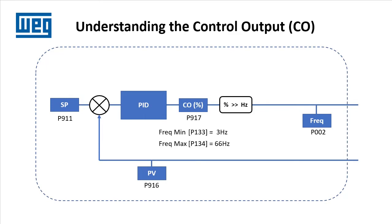So if you enter a 3 for the min frequency and a 66 for the max frequency, a control output of 0% means 3 hertz and a control output of 100% means 66 hertz.